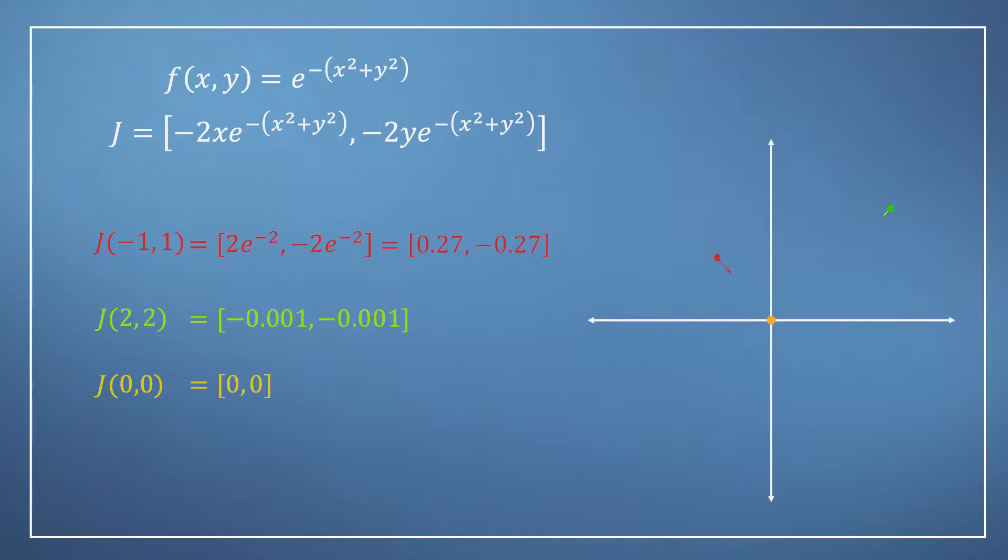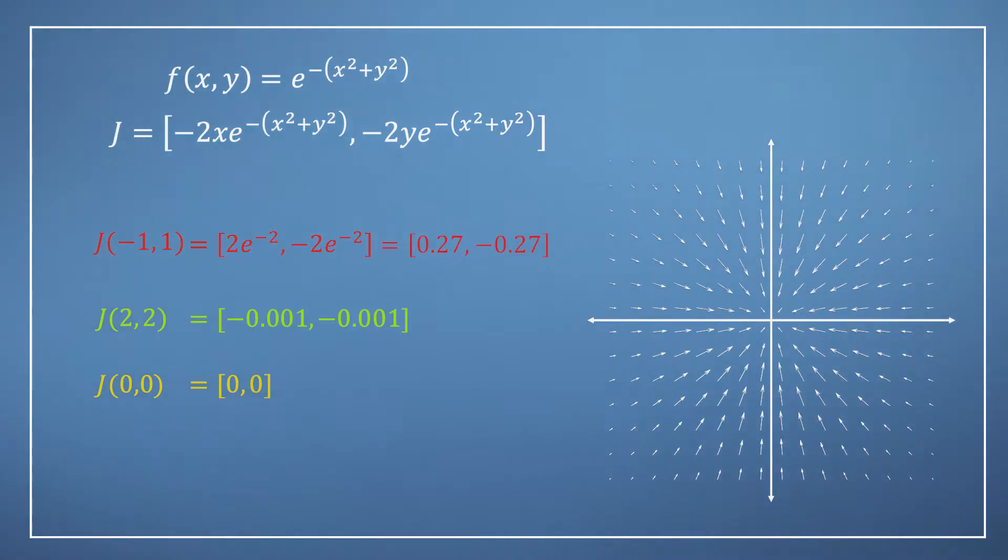However if we now reveal the rest of the Jacobian vector field it becomes clear that the origin must be the maximum of this system. Let's now move back to the color map representation of this function where the brighter regions represent high values of f. So finally we can remove the vector field and observe the function in 3D which I hope matches up with your expectations.